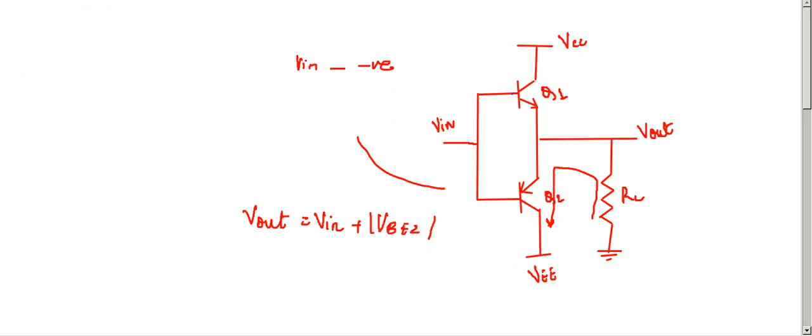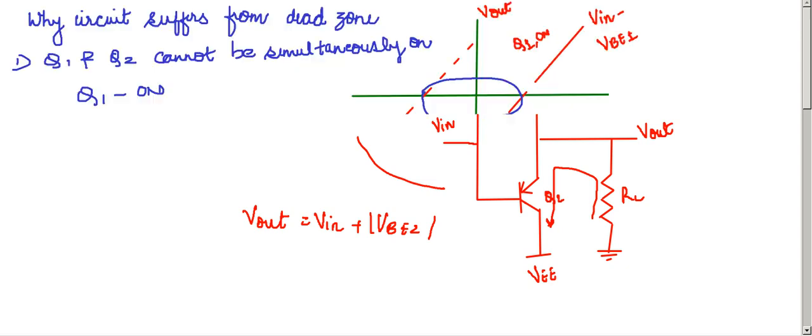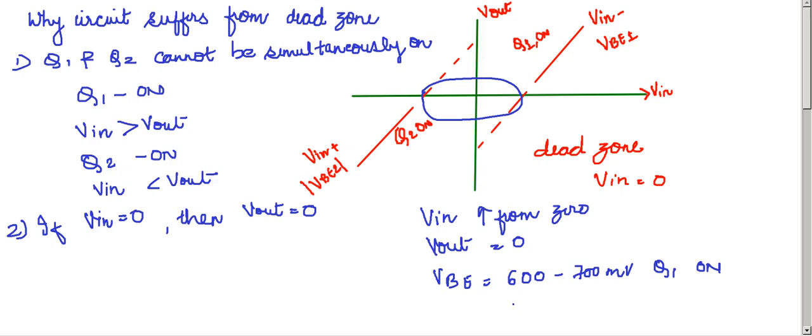Let us see this again. To make the transistor Q1 ON, VIN must be at least approximately equal to 600 to 700 millivolts so that the transistor Q1 turns ON. The output, therefore, remains at zero for VIN less than 600 millivolts.